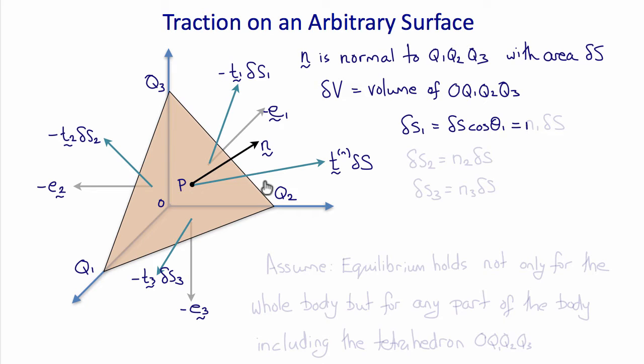So delta s1 would be delta s times the cosine of theta 1, or n1 times delta s. delta s2 would be n2 times delta s, and delta s3 would be n3 times delta s.